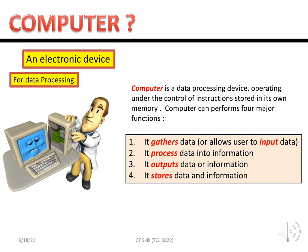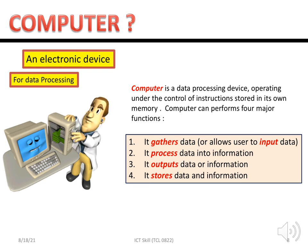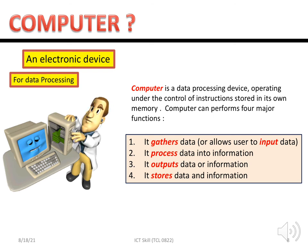A computer is an electronic device that works using four functions: input, processing, output, and storage. First, the user inputs data into the computer. Then that data is processed by the computer. After processing, the output is displayed. The computer can also store data and information. Those are the four major functions of a computer.